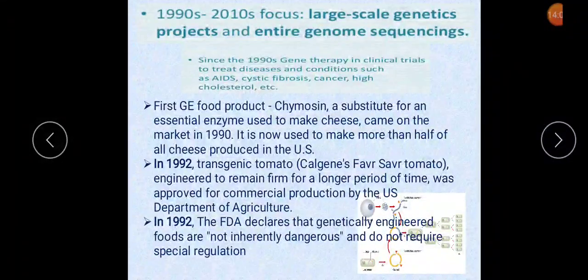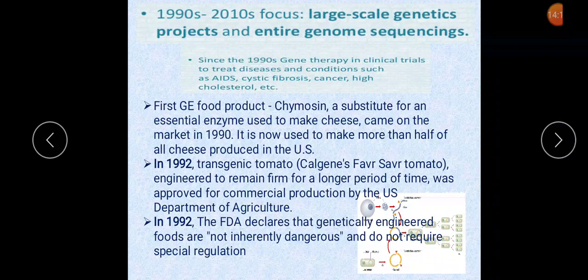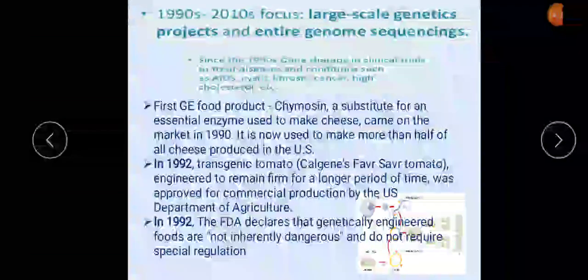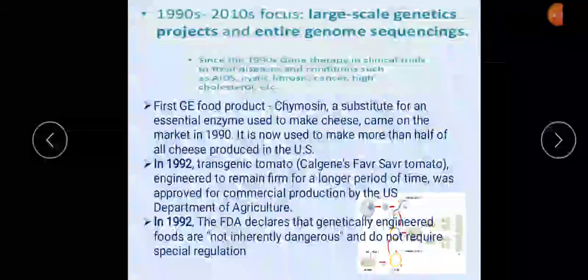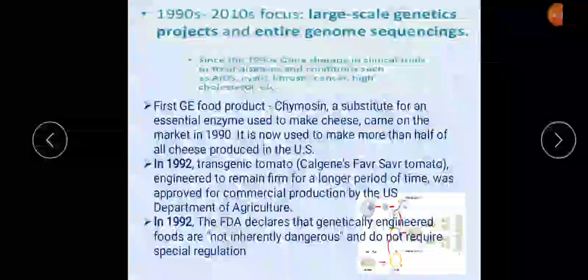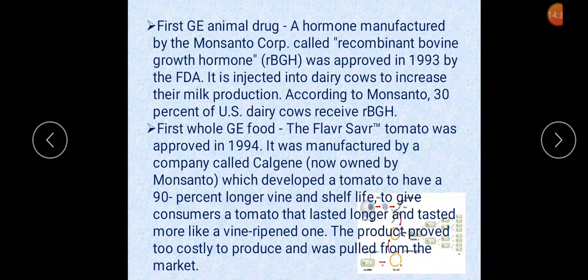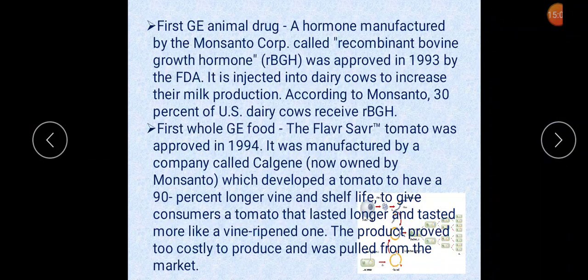Chymosin is now used to make more than half of all cheese produced in the US. In 1992, a transgenic tomato engineered to remain firm for a longer period was approved for commercial production by the US Department of Agriculture. Also in 1992, the FDA declared that genetically engineered foods are not inherently dangerous and do not require special regulation. The first genetically engineered animal drug — recombinant bovine growth hormone, manufactured by Monsanto — was approved by the FDA in 1993.